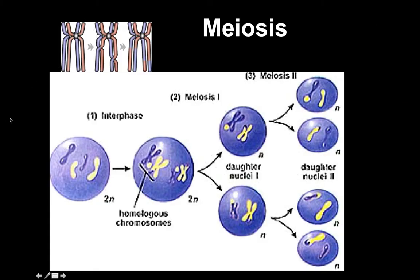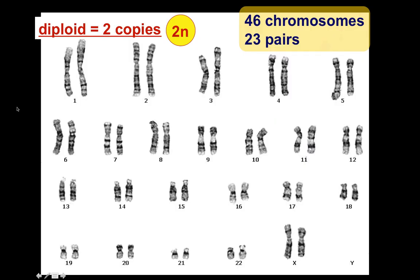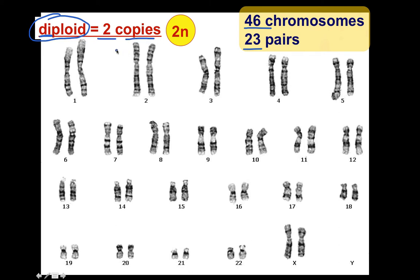A normal human cell has 46 chromosomes total — 46 chromosomes, or 23 pairs. Just like if you had 23 pairs of shoes, that would be 46 shoes total. So we have 23 pairs of chromosomes for a total of 46. That is the diploid number. Diploid — 'di' meaning two — so diploid means two copies of each chromosome. The symbol for that is 2n, where n equals the number of chromosomes.